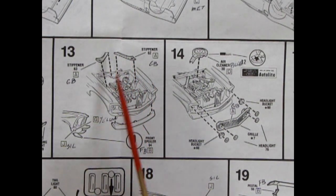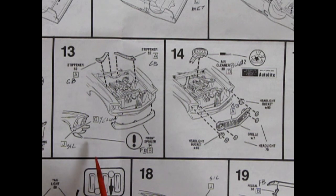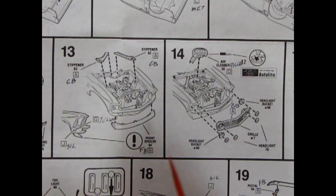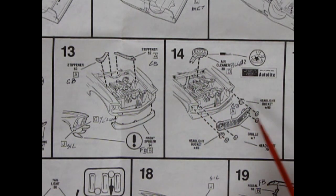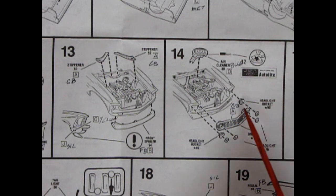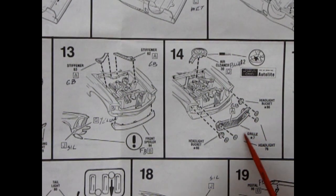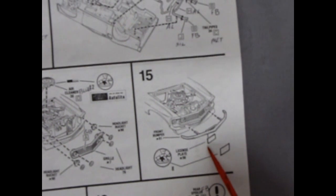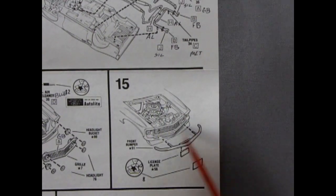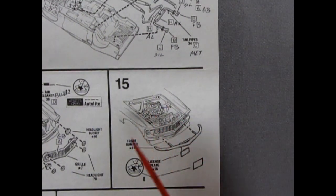Which shows the stiffeners going on the top. And then our front spoiler gluing on here. And it's showing you how to paint your side marker lamps. Panel fourteen has our air cleaner drop onto our carburetor. And then we've got our headlights all going in and headlight buckets in the back here. So pretty cool.